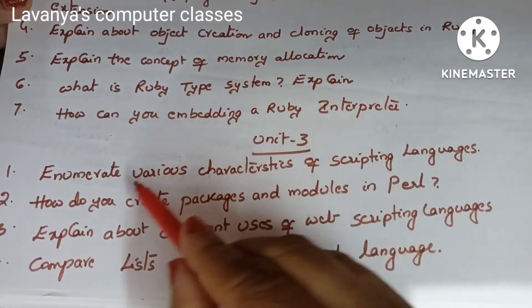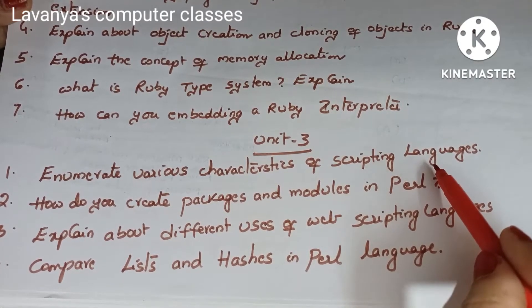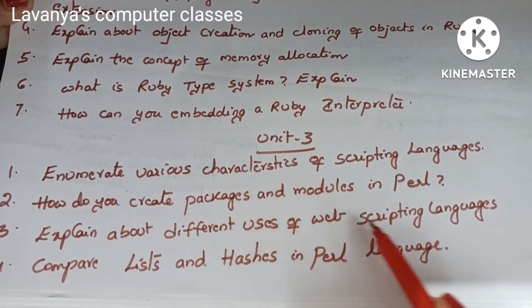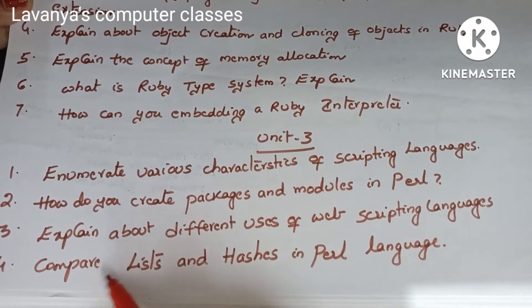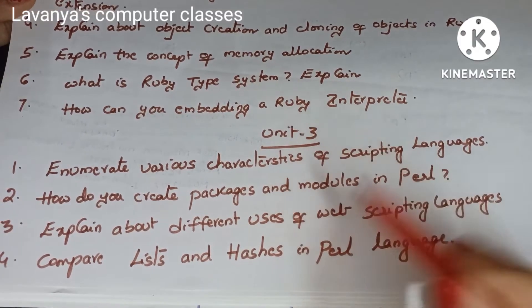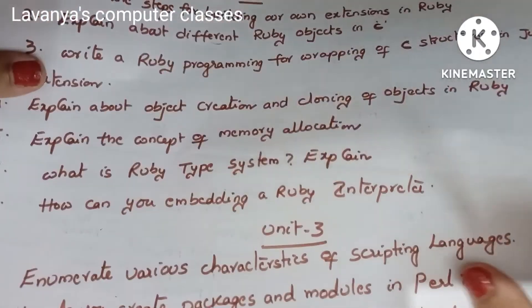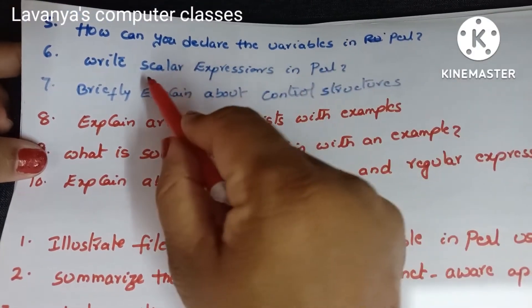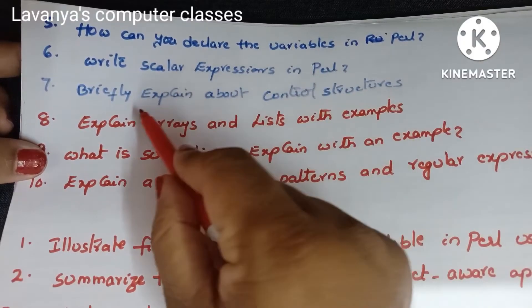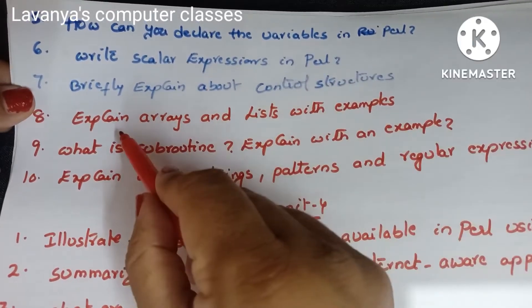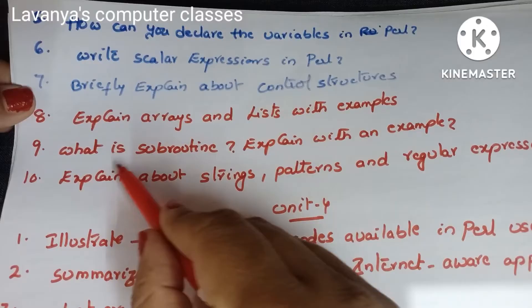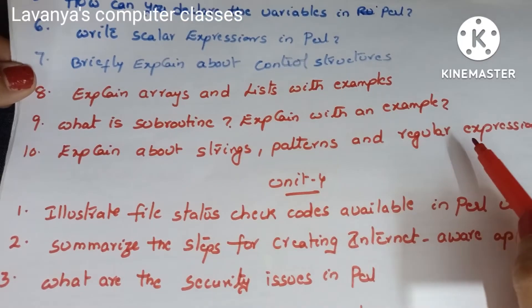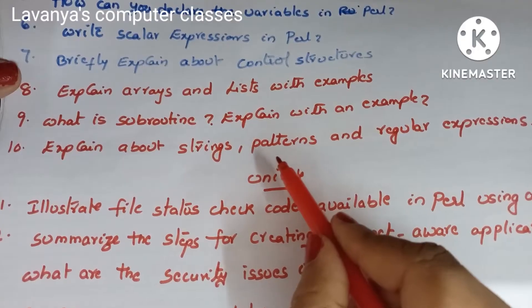Unit 3 important questions: enumerate various characteristics of scripting languages. How do you create packages and modules in Perl? Explain different uses of web scripting languages. And compare lists and hashes in Perl — these four came from university question papers. Remaining important questions in unit 3: how can you declare variables in Perl? Write scalar expressions in Perl. Briefly explain control structures in Perl. Explain arrays and lists with examples. What is a subroutine? Explain with an example program. Explain about strings, patterns and regular expressions — all with examples, all in Perl.